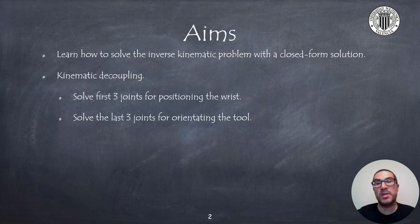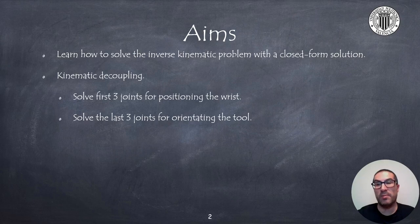The aims of the presentation are to provide a closed-form solution to the inverse kinematic problem. We will study the case of kinematic decoupling when using spherical wrists that will allow us to solve the problem as a separate problem: one for positioning the wrist with the first three joints and then a second problem for orientating the tool with the last three joints.